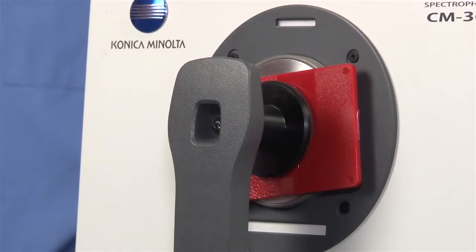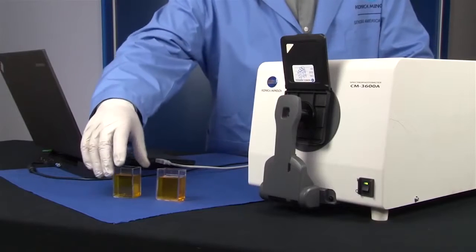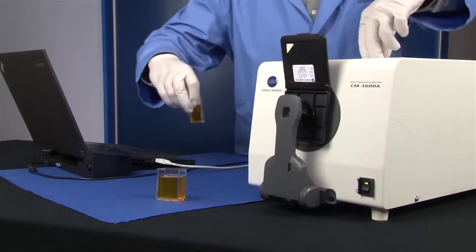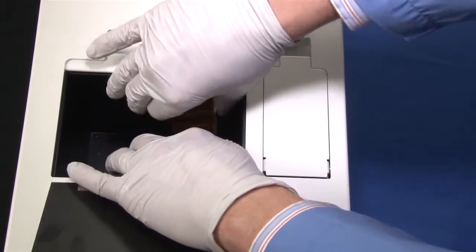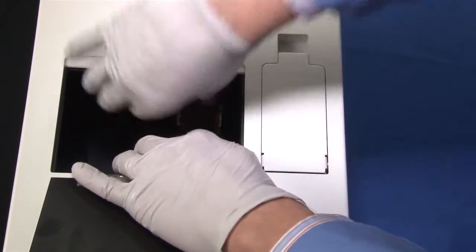The CM3600A measures solid or liquid samples in reflectance or transmittance mode, offering great flexibility for various samples ranging from opaque, translucent, and transparent.